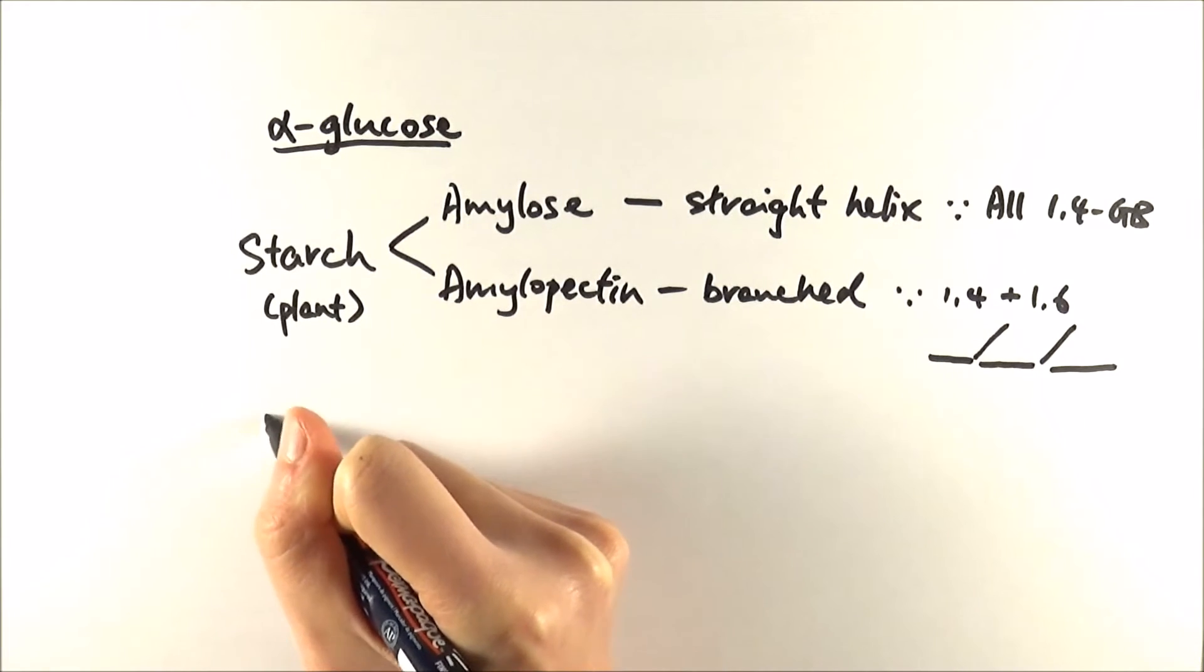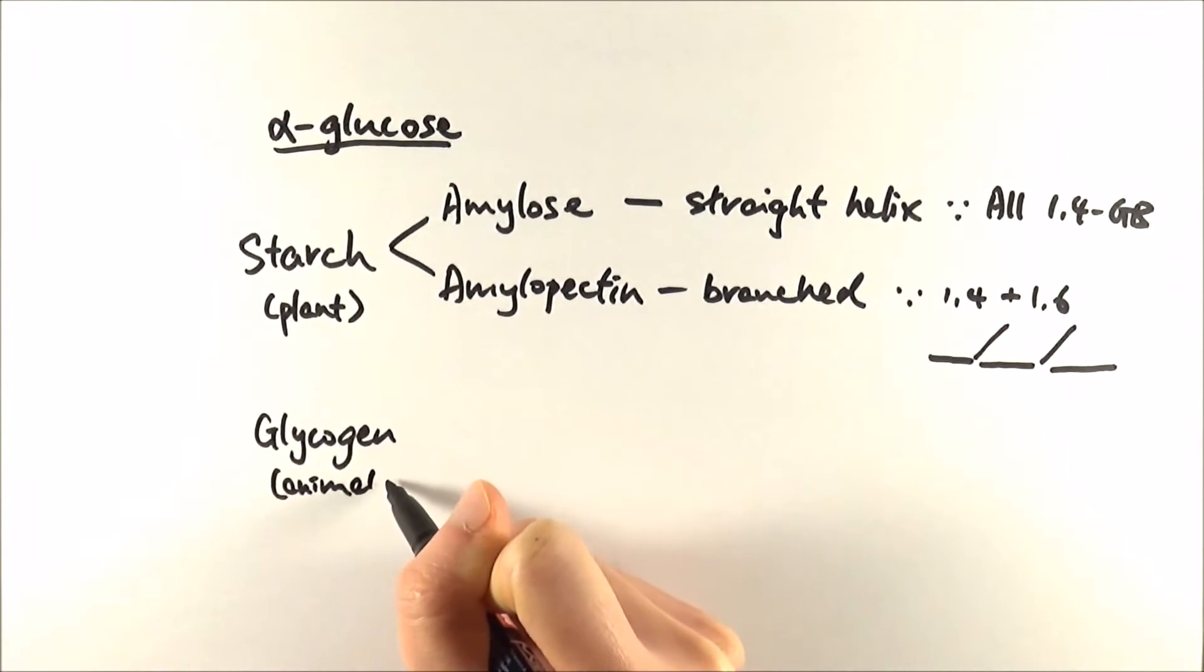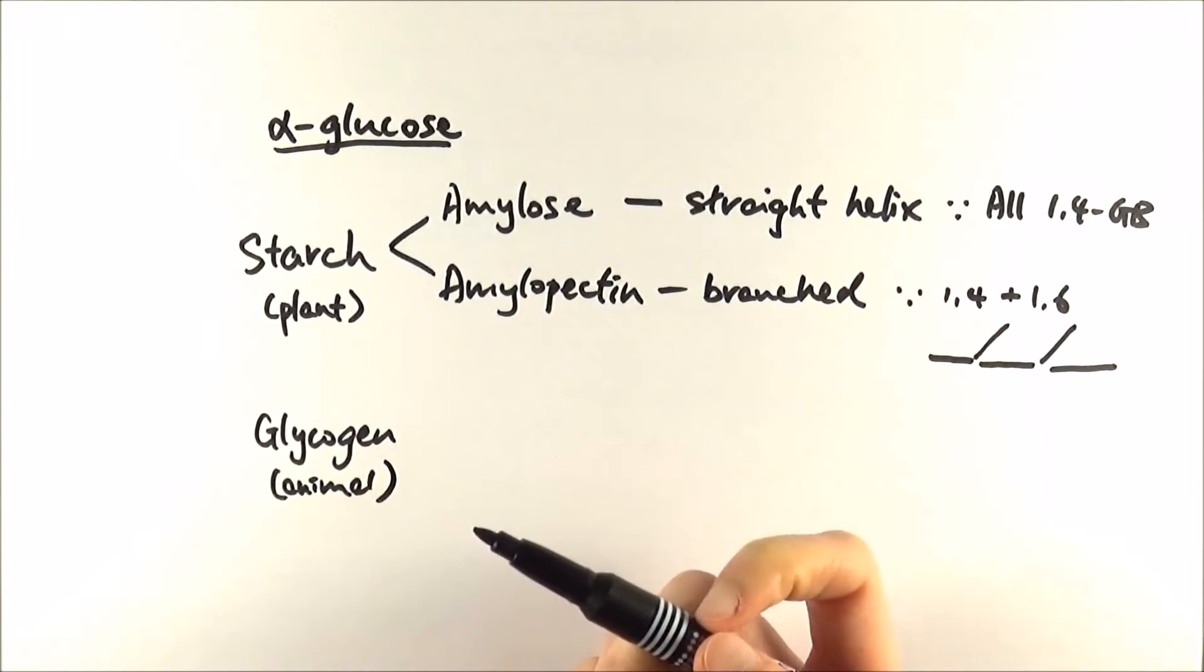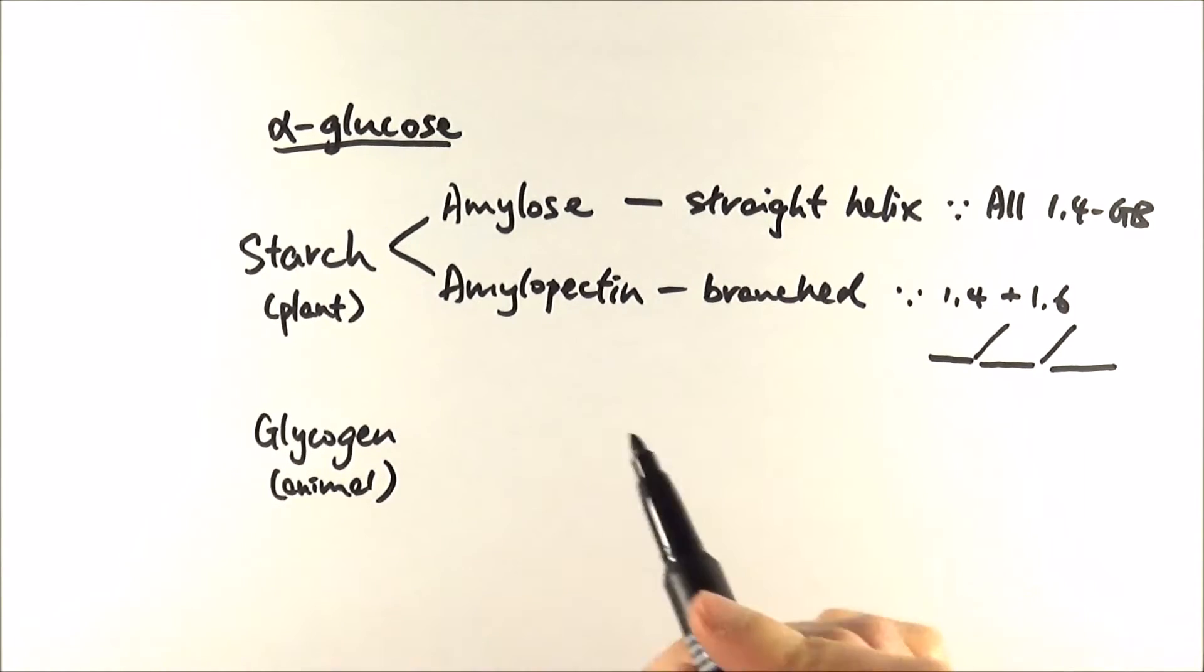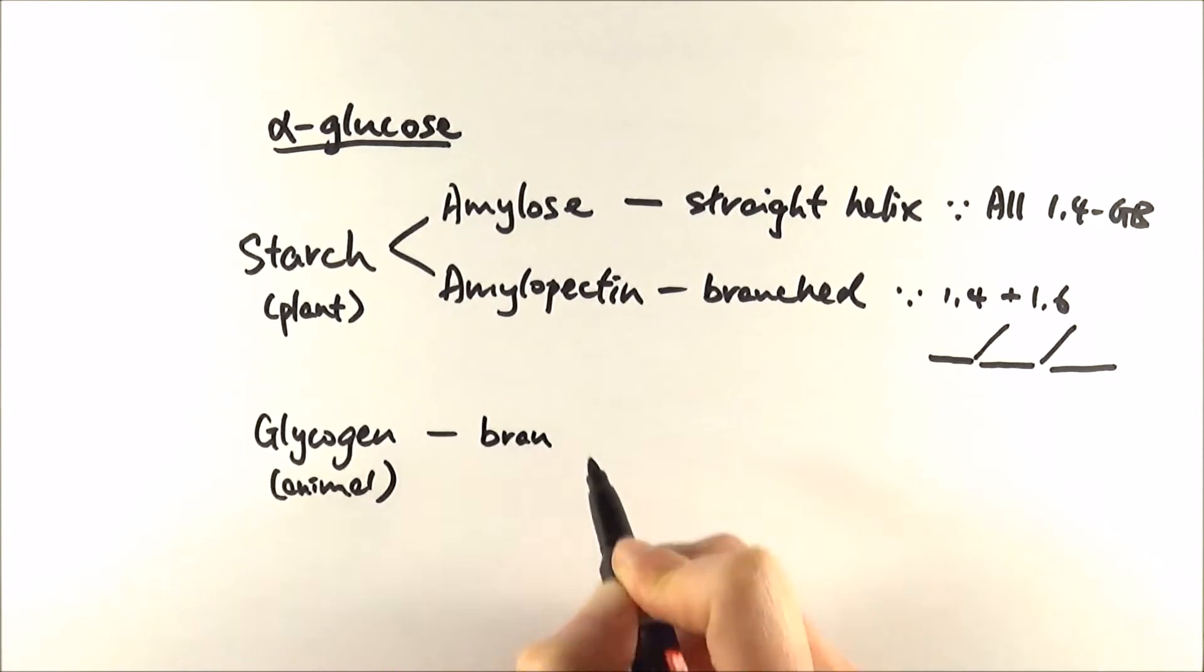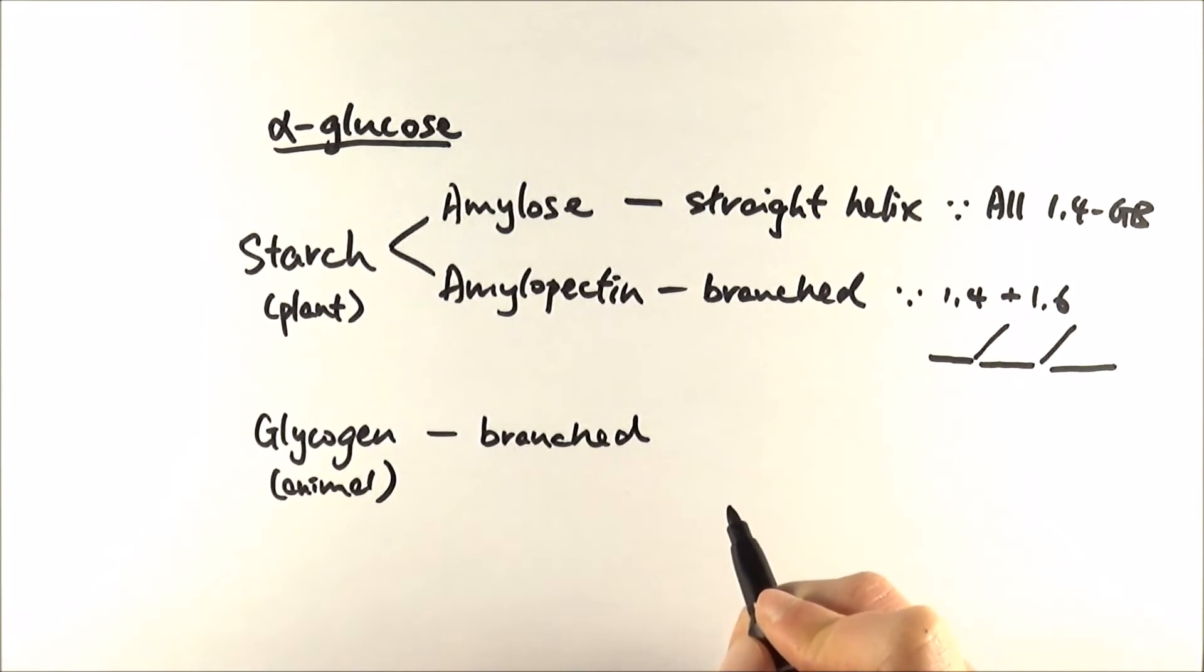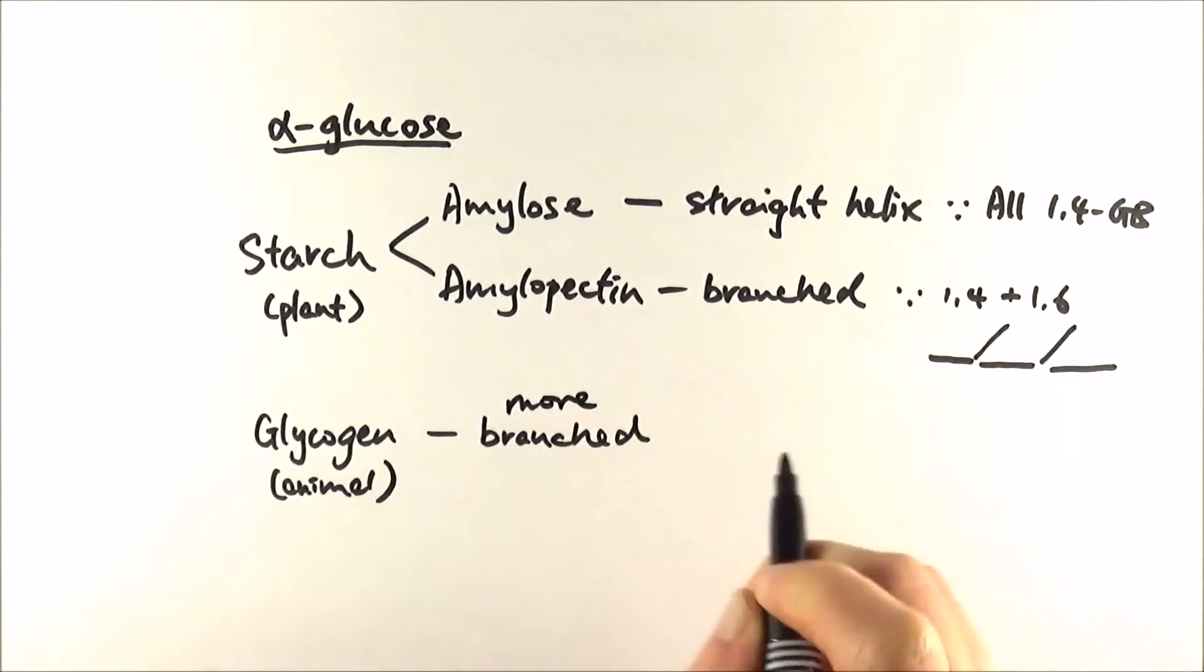The other one in the animal one is glycogen or fungi as well. Glycogen is basically the animal version of amylopectin. It's also branched and hence it's made up of 1,4 and 1,6. But the difference between amylopectin and glycogen is that there are more 1,6 bonds existing, and glycogen is more frequent, so it's more branched than amylopectin.